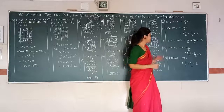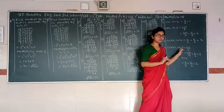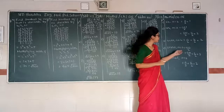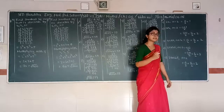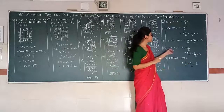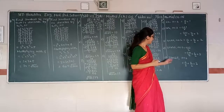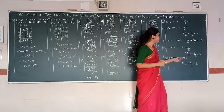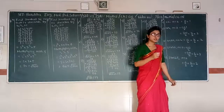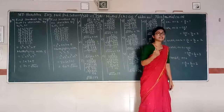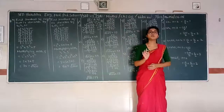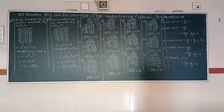For 27225, N equals 5. Since 5 is odd, we use (N+1)/2: 5 plus 1 upon 2 gives 6 upon 2, which is 3. There will be 3 digits in the square root of 27225. For 390625, there are 6 digits, which is even, so N upon 2 equals 6 upon 2 equals 3. There will be 3 digits in the square root of 390625. Thank you.